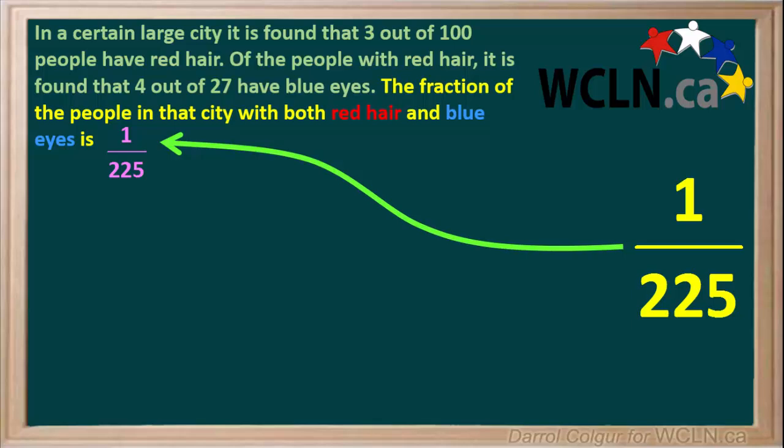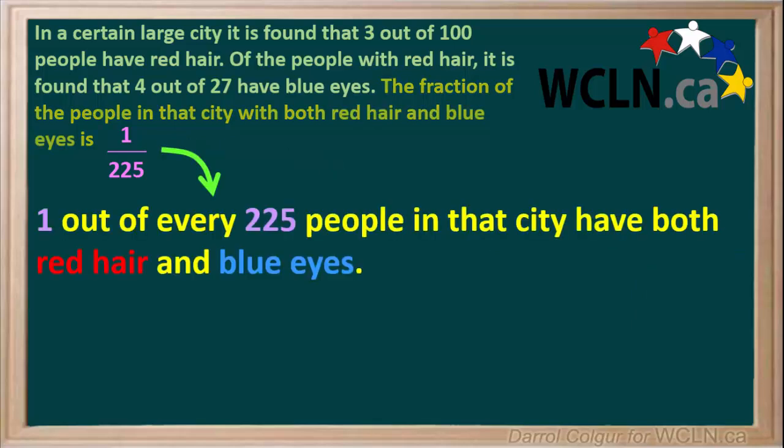Therefore the fraction of people in that city with both red hair and blue eyes is 1/225. Or we could say that 1 out of every 225 people in that city have both red hair and blue eyes.